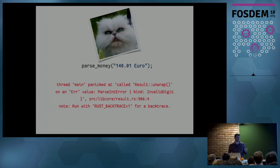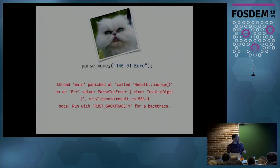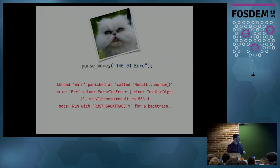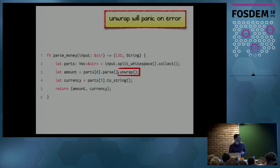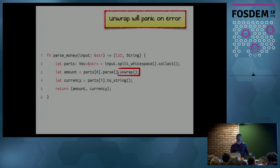Even though Rust is safe, it cannot save you from not declaring your intent. We get an error saying 'called Result::unwrap() on an Err value' with a parse int error about an invalid digit. What happened is we panicked on that unwrap. But that's fine, because once you have something running you can search for `unwrap` in your code and replace it with something nicer — you get the best of both worlds: rapid prototyping and safety when you need it.